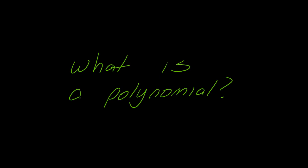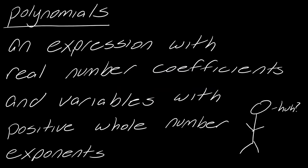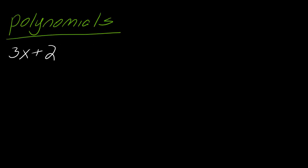So first of all, what is a polynomial? The definition of a polynomial is that it's an expression with real number coefficients and variables with positive whole number exponents. Although this might seem like a lot, I think it's a lot of times easier to just show you what a polynomial is versus what it's not. So here are a few examples of polynomials.